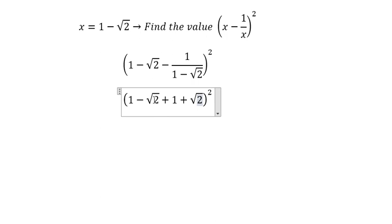Negative square root of 2 plus square root of 2, they will cancel together. Now you get 2, and that's 4. That's the end. Thank you for watching.